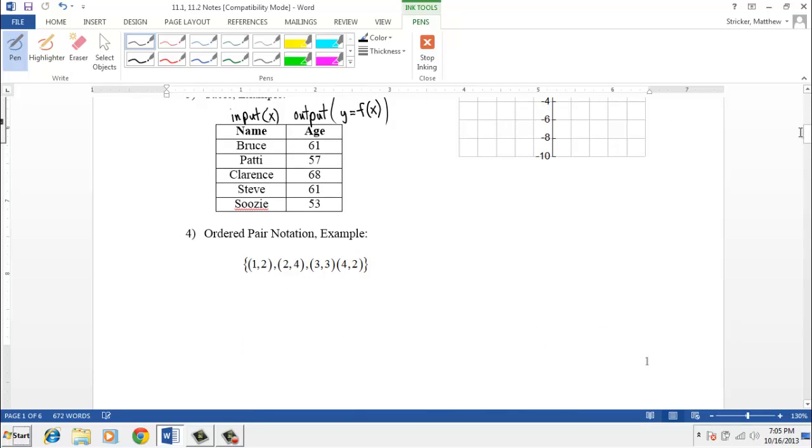So here you see, Bruce has only one output, 61, Patty has only one age output, 57, Clarence is only 68, Steve is only 61, Susie is only 53. It wouldn't be a function if we said Steve was both 61 years old and 65 years old at the same time, which of course we know is absurd, that's not possible.